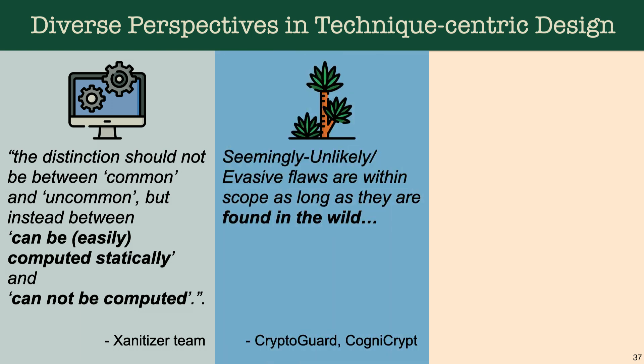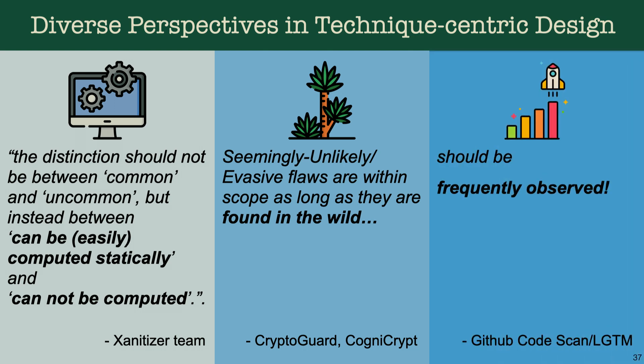On the other hand, CryptoGuard and Cognitive said that as long as these flaws are found in the wild, they should be within the scope of these cryptodetectors. Surprisingly, that was not the case for GitHub code scan/LGTM — they said that not only should these flaws be found in the wild, they should also be frequently observed to be included within the scope of their analysis techniques.